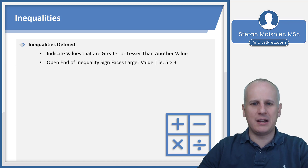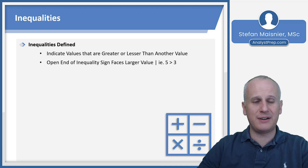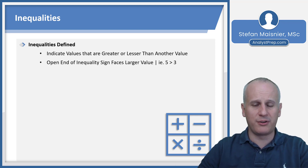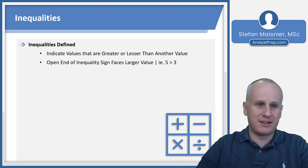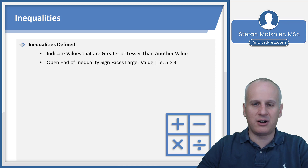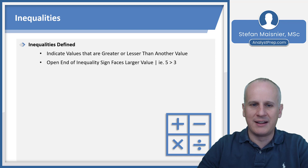The open end of the inequality sign faces the larger value — for instance, five is greater than three. You can also have greater than or equal to, but for this lesson we'll focus on solely greater than and less than, which is technically more specific because greater than definitively cuts it off, and you can keep writing decimals forever.